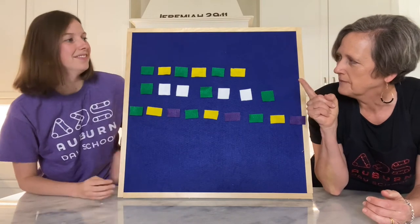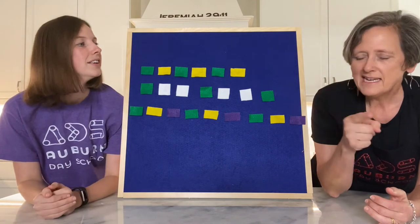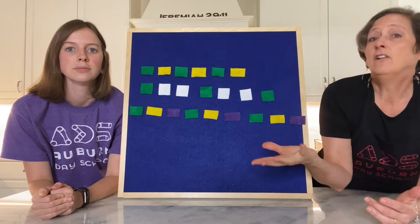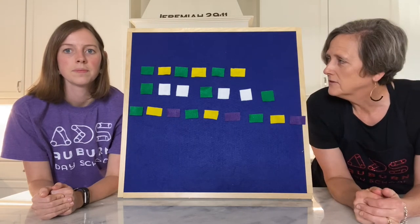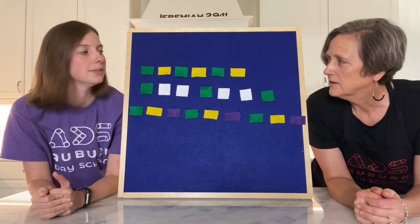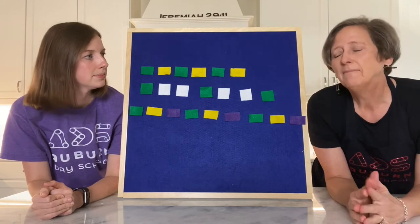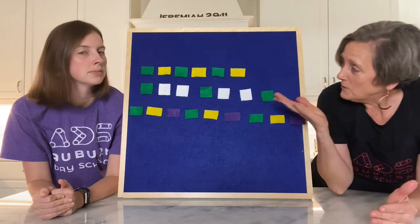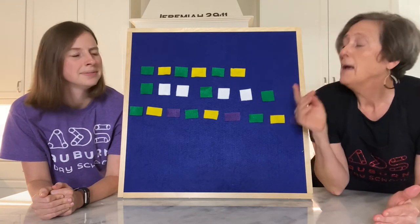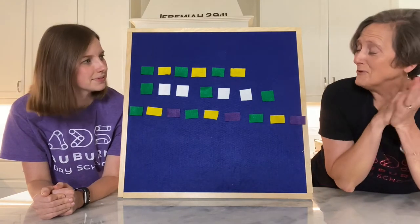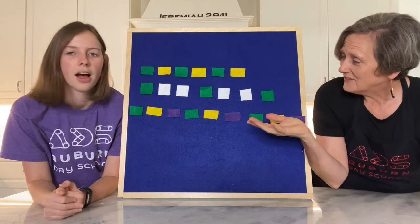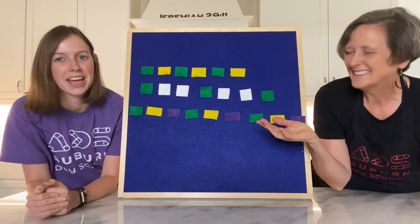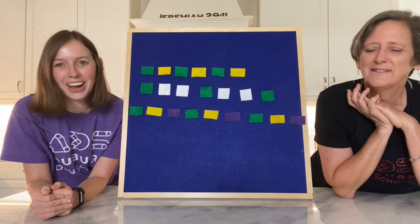I have a joke for you. Pete and repeat were sitting on a log. Pete fell off. Who was left? Repeat. Pete and repeat were sitting on a log. Pete fell off. Who was left? Repeat. Oh, I get it — I keep saying repeat and you keep going!